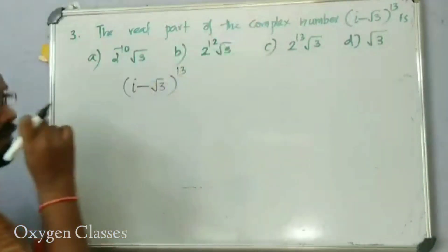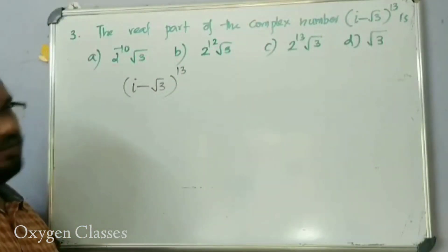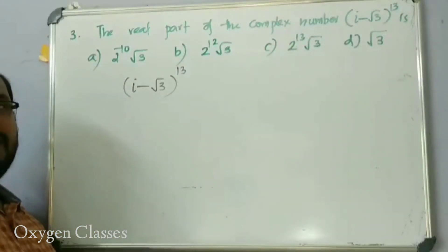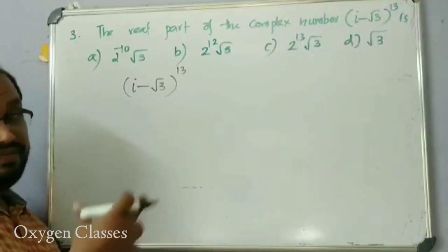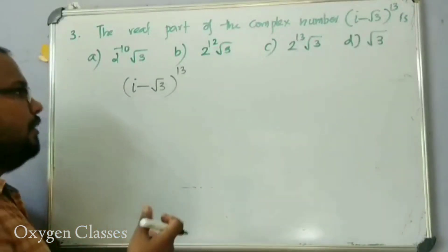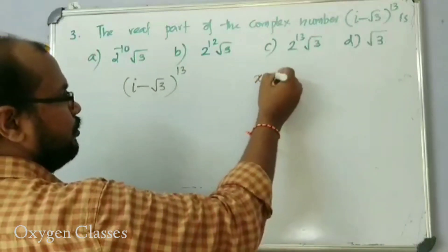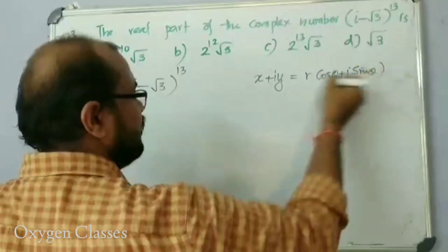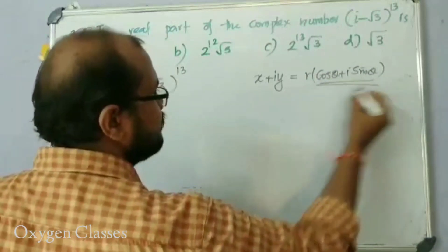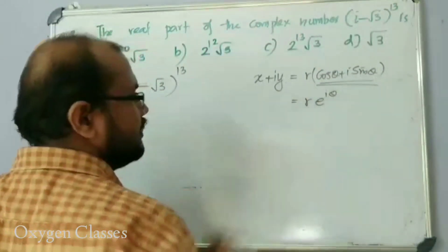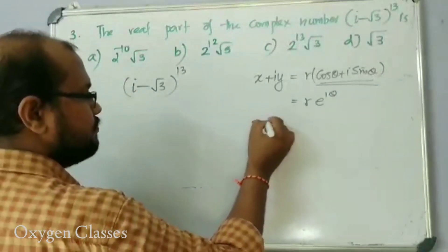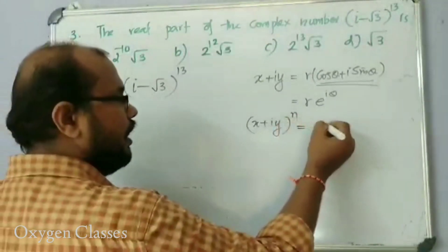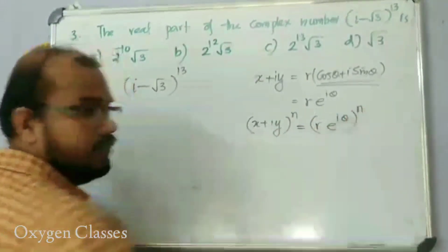We will convert the complex number to polar form. Writing x plus iy as r(cos theta plus i sin theta) using Euler's rule, we get r times e raised to i theta. Then (x plus iy) raised to n equals r raised to n times e raised to i n theta.